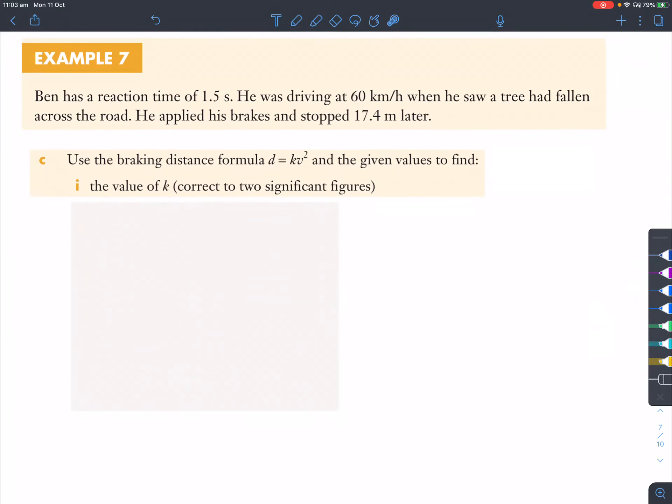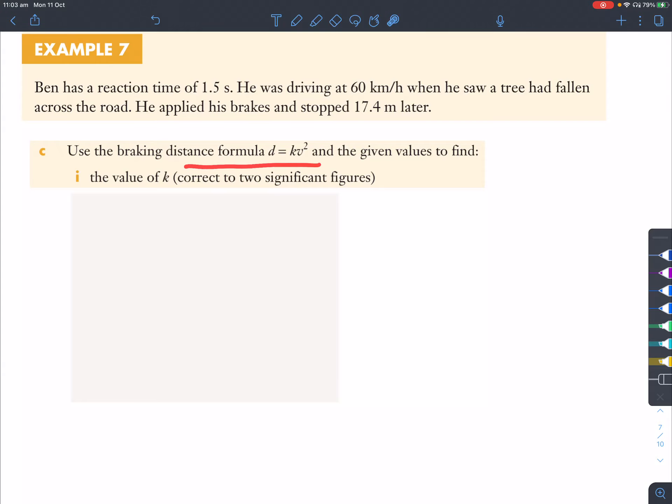Now, in question C, use the braking distance formula, D equals KV squared, and the given values, to find the value of K, correct it to the significant figures. So, if we're finding the value of K here, which is just a constant value, just a number, you've got to substitute in these two values here. So, you're given that D here, which is your braking distance here, at 17.4 meters, from when he first broke to when the car stopped. Then, V is in kilometers per hour, which is right here in the information, that's how fast the car was driving. Now, if you put these two values in, so, D is this, V is that. All right, you'll get this result here, substitute it in.